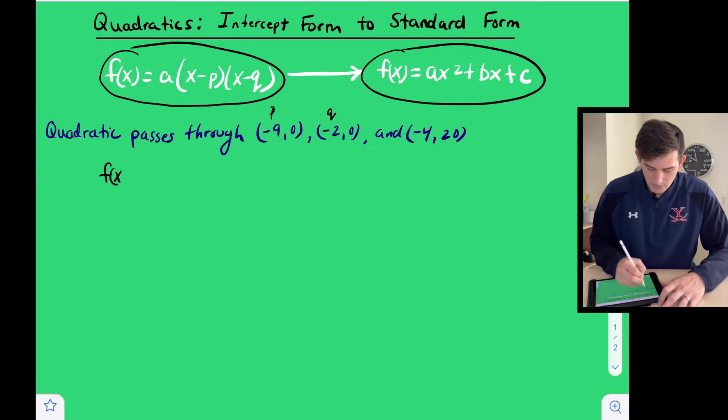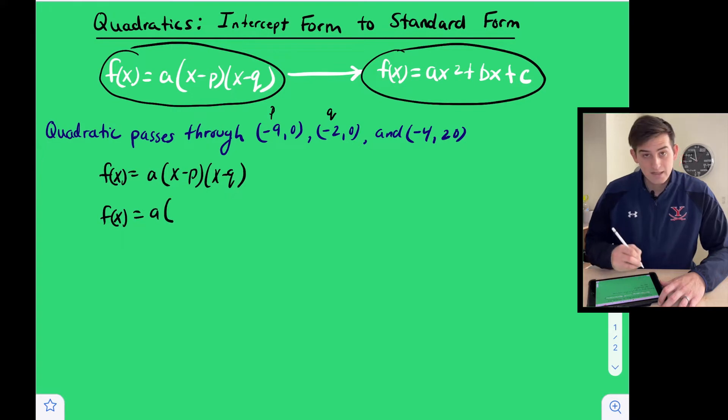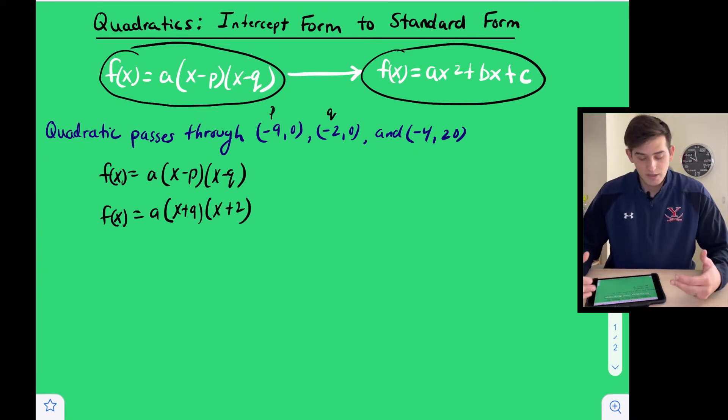So we're going to say f of x equals a times x minus p times x minus q. And let's plug in negative nine for p. So once we plug in a negative number there, x minus a negative is going to become x plus nine. And the same thing for plugging in negative two for q, that's going to become x plus two.